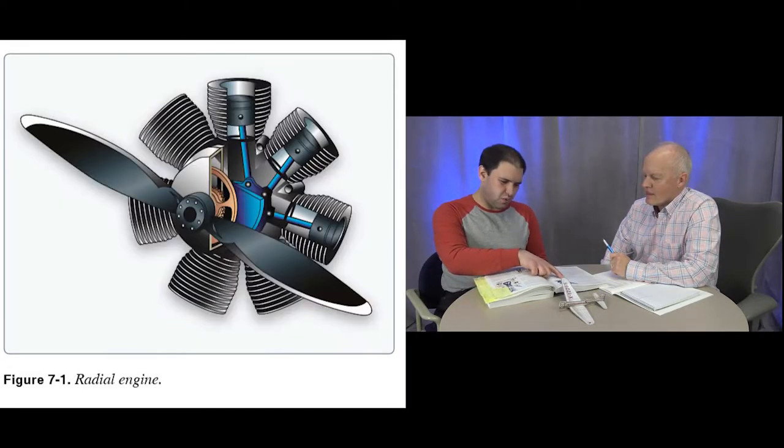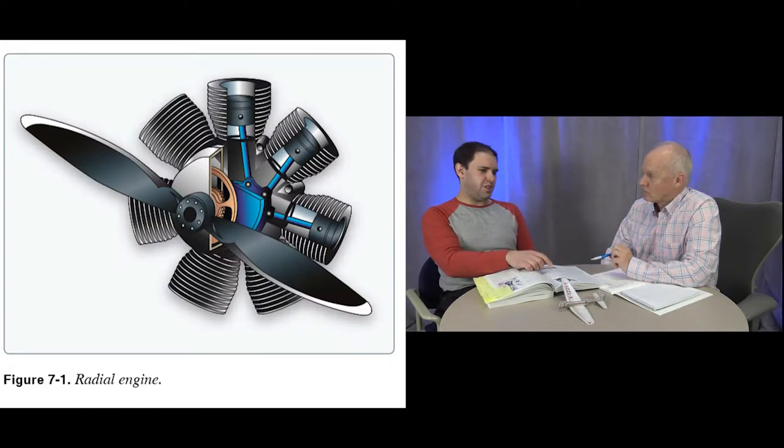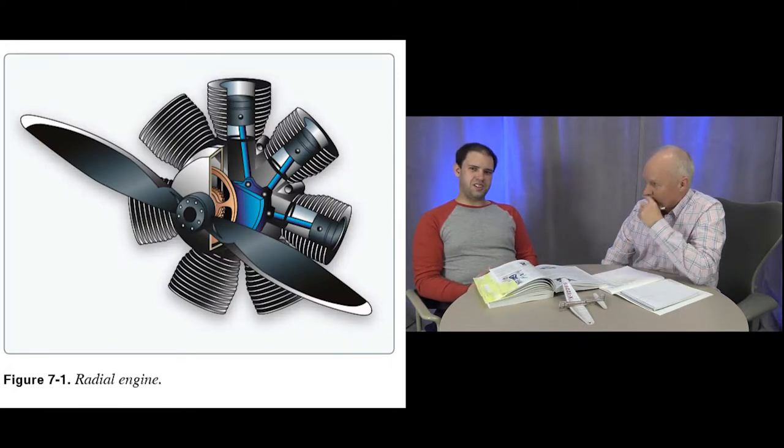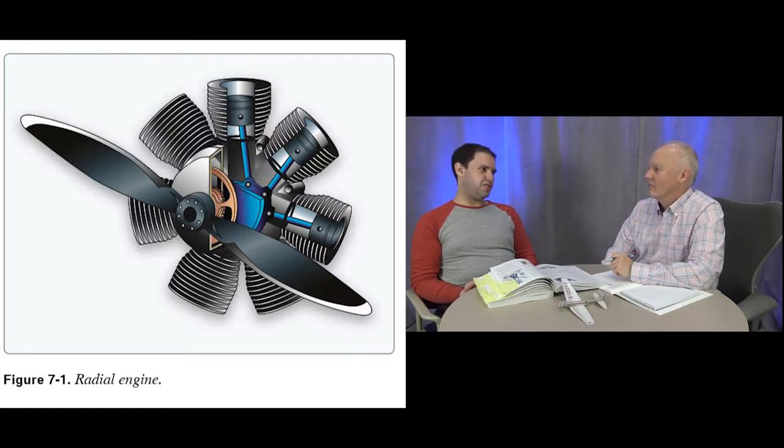We also have in figure 7-1 a radial engine. Those are cool engines — what you find on warbirds — and they sound the coolest. They don't use those on airplanes very much anymore. The piston engines we use in airplanes are primarily four-stroke gasoline engines, just like you'd find in a car.